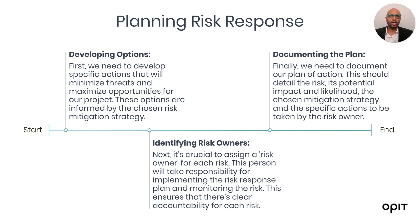And then there's documenting the plan. Finally, we need to document our plan of actions. This should detail the risk, its potential impact and likelihood, the chosen mitigation strategy, and the specific actions to be taken by the risk owner. By the end of this step, we should have a robust action plan to manage each of the risks we've identified, setting us up for success in delivering our project.